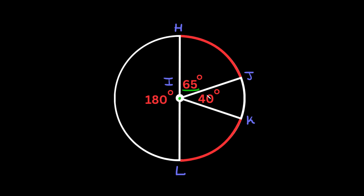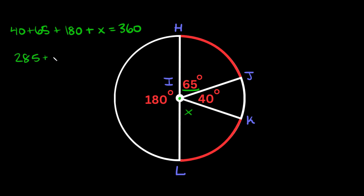We add the known angles: 40 plus 65 plus 180 plus the missing angle X equals 360. So 40 plus 65 is 105, and 105 plus 180 is 285. So 285 plus X equals 360, meaning X equals 75 degrees. Since this angle is 65 degrees and the missing angle is 75 degrees, the two central angles are not the same, so the two arcs are not congruent.